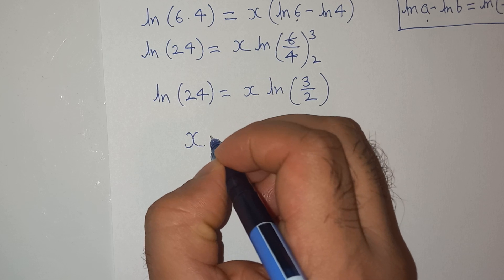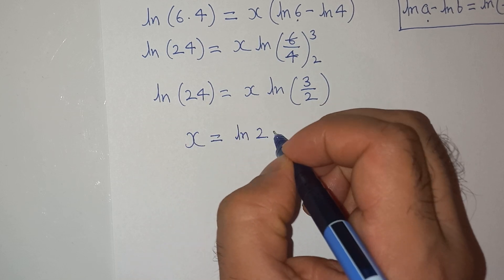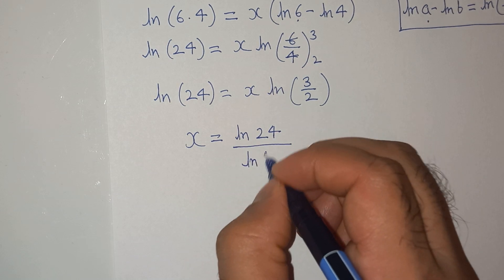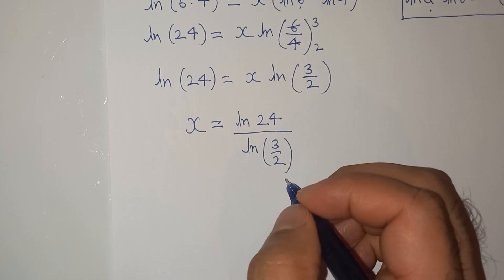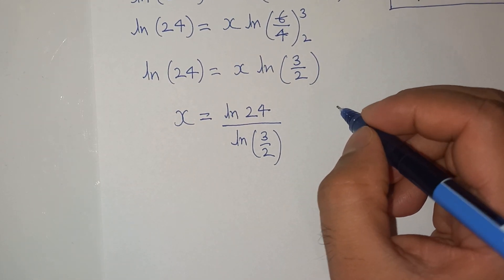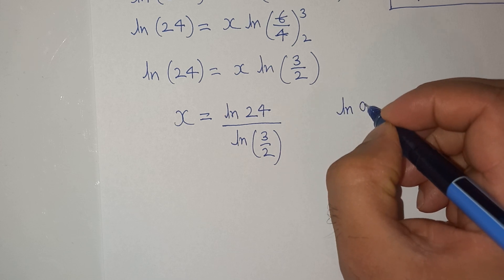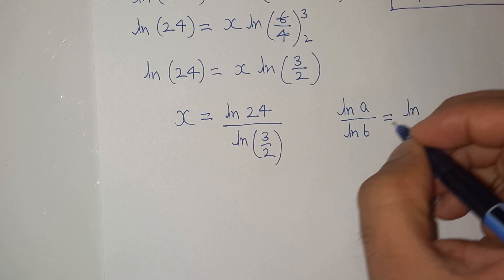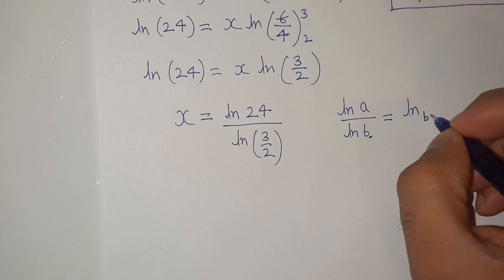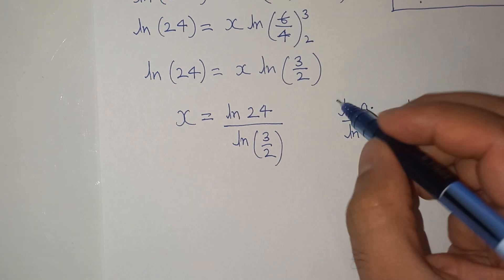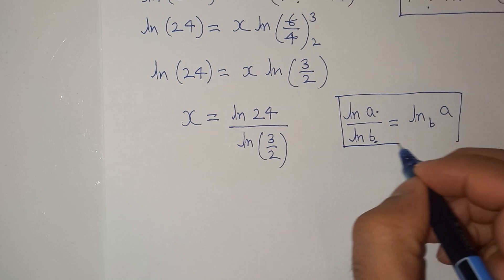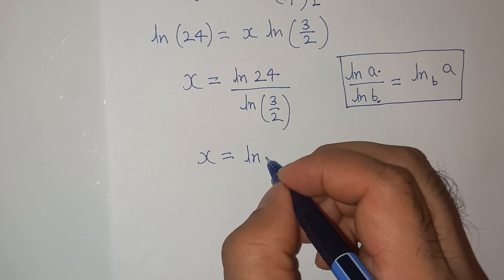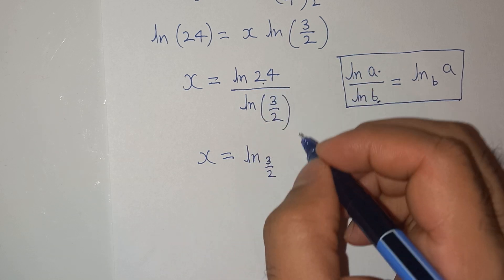Now x equals log 24 divided by log(3/2). There is another logarithm rule which says log a divided by log b equals log base b of a. So finally the value of x is x equals log base (3/2) of 24.